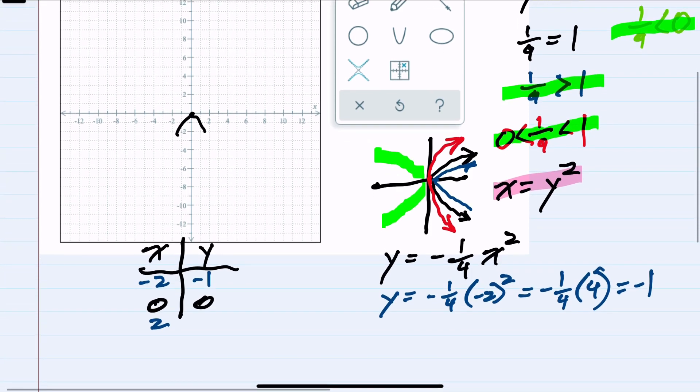Similarly, when I plug in x equals 2, I get negative 1 fourth times positive 2 squared, which again is negative 1 fourth times 4, which is negative 1.